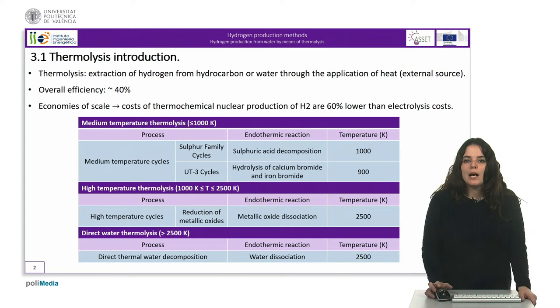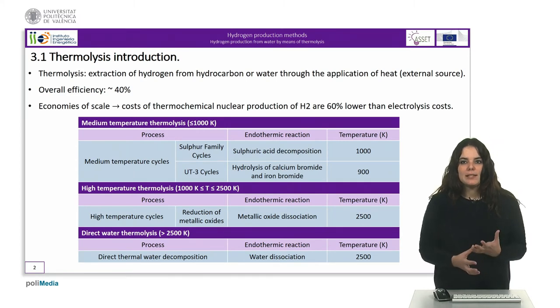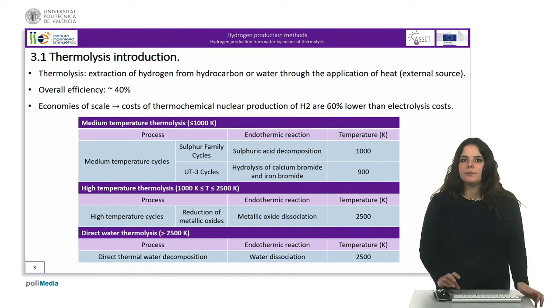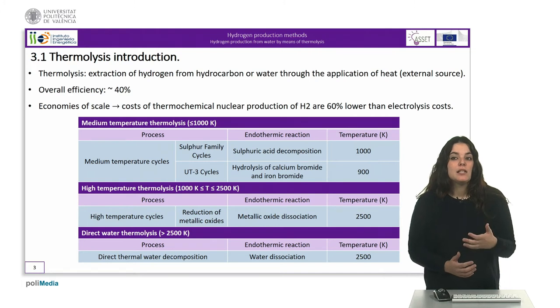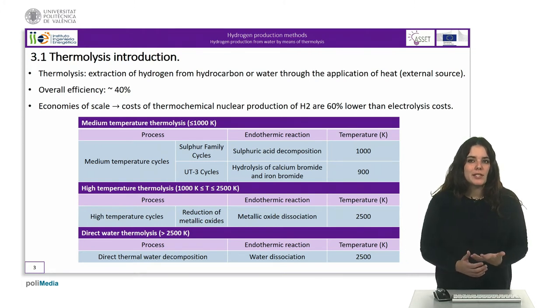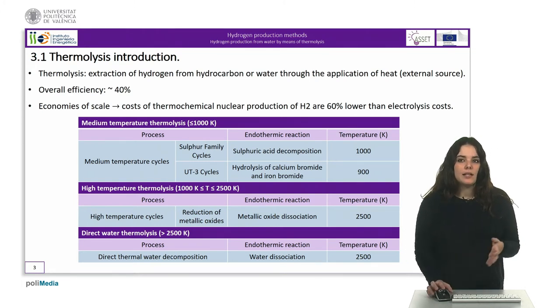Secondly, we have the high temperature thermolysis where reduction reactions of metallic oxides take place at higher temperatures up to 2500 degrees Kelvin. Finally, at the highest temperature level we can find direct water thermolysis that requires temperatures higher than 2500 degrees Kelvin and currently is unapproachable in practice.